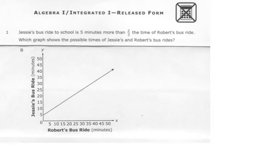Well, first thing, I'm going to look at my graph, and Jesse is on the y-axis, Robert is on the x-axis. So I know that Jesse is going to be my y, and Robert is going to be my x.